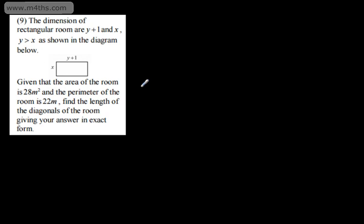Question 9: the dimensions of a rectangular room are y plus 1 and x, where y is greater than x, as shown in the diagram. Given that the area of the room is 28 metres squared and the perimeter is 22 metres, find the length of the diagonals of the room in exact form.